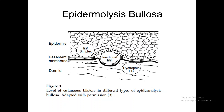The most superficial one is epidermolysis bullosa simplex, where the bulla forms at the level of the epidermis, the most superficial layer of the skin. The second is junctional epidermolysis bullosa, where the bullae are at the level of the basement membrane — that is the junction between the epidermis and the dermis. The third is dystrophic epidermolysis bullosa, at the level between the basement membrane and dermis.